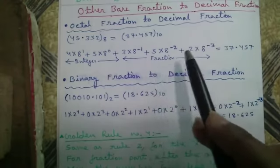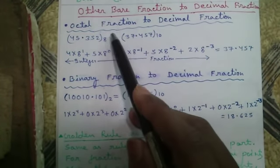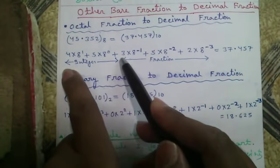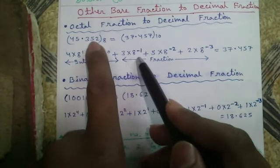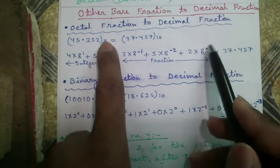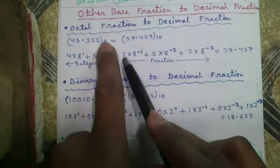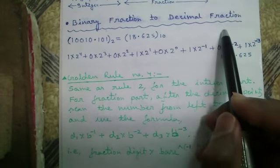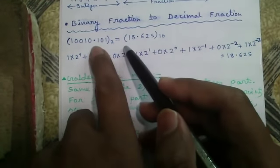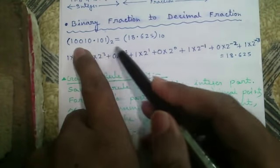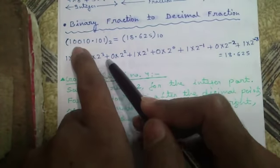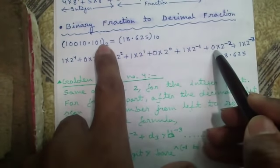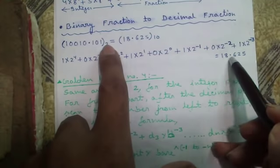Now the reverse: other base fractions back to decimal fraction. Octal fraction to decimal fraction — for the integer part, use the same process: 5×8⁰ + 4×8¹. For the fraction part, the trick is: use negative powers — 3×8⁻¹ + 5×8⁻² + 2×8⁻³. The base power is negative and increases from left to right. It becomes 37.457 in decimal. Binary fraction to decimal: same process for integer — 0×2⁰ + 1×2¹ + 0×2² + 0×2³ + 1×2⁴; for fraction — 1×2⁻¹ + 0×2⁻² + 1×2⁻³. It becomes 18.625 in decimal.